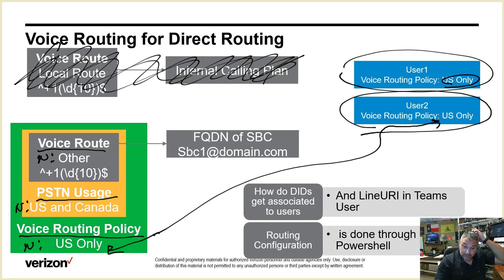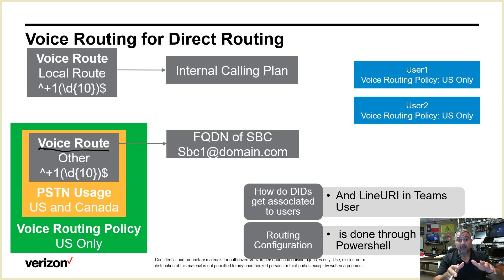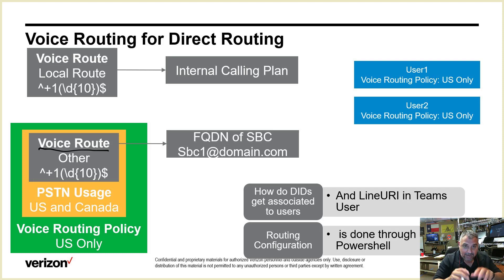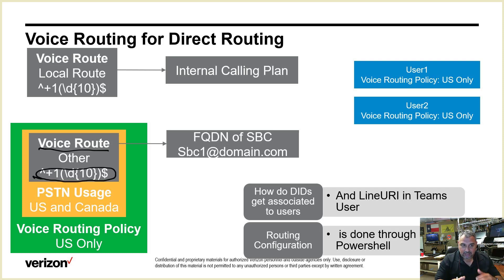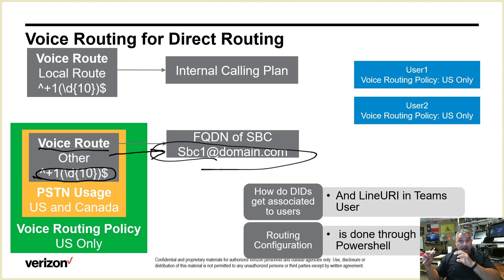Let me dive a bit deeper. Your voice route — configured via remote PowerShell — will have a route pattern. If a dialed number matches that pattern, it takes that voice route. The voice route points to your SBC via FQDN — that public interface on your on-premises SBC secured with a certificate. The voice route is then placed into a PSTN usage.